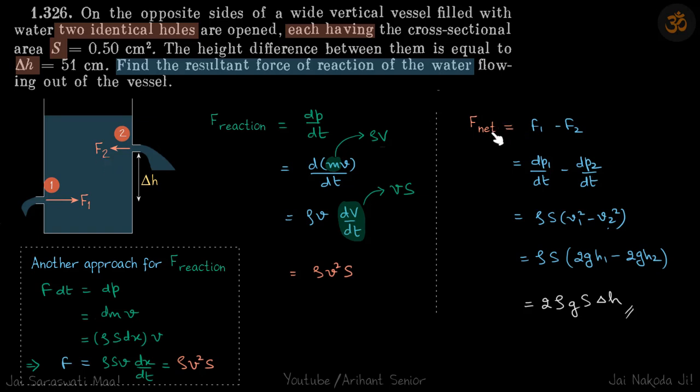What we need to find is F net, that is F1 minus F2. F1 will be DP1 by DT and F2 will be DP2 by DT. Now what is rate of change of momentum for the liquid that is coming out?